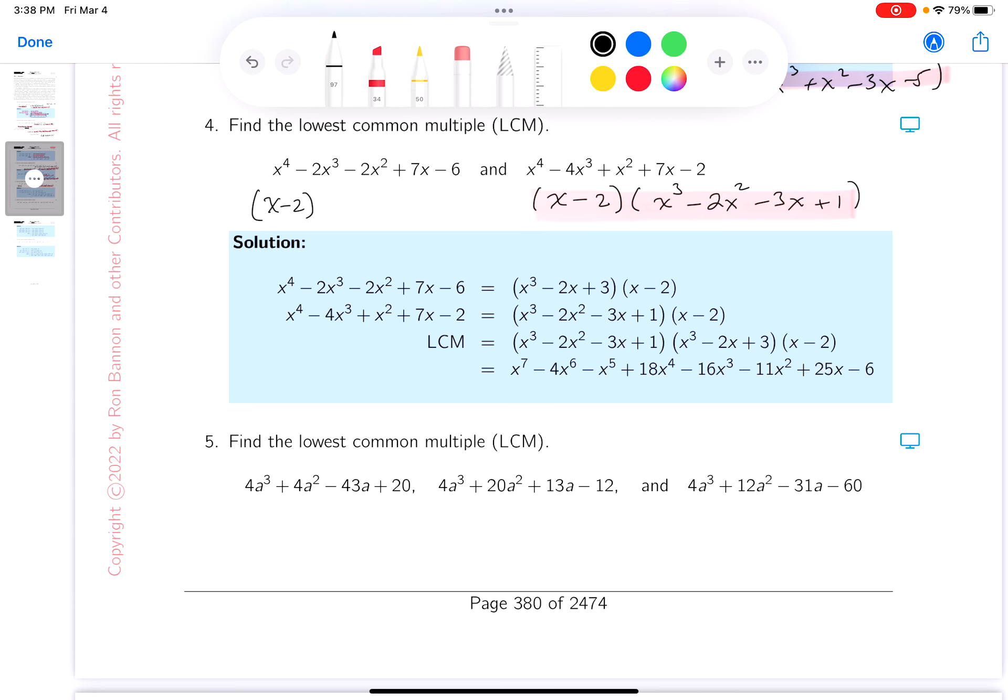But what you need to do is you need to do a long division. When you do that, you're going to find out quite simply it gives you x cubed minus 2x plus 3.